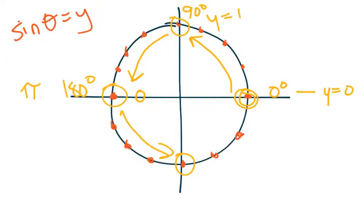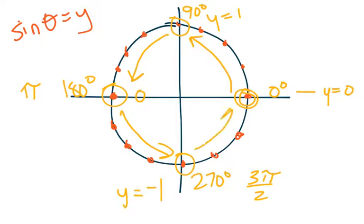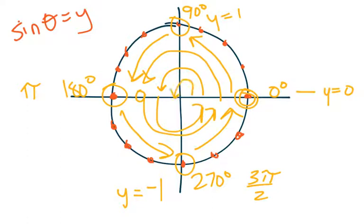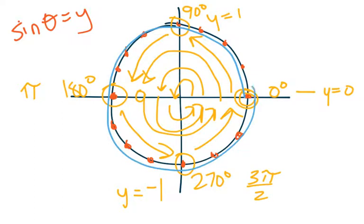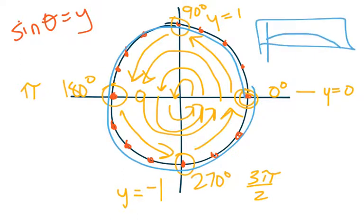Then as we go down to 270 degrees, or 3π/2, that y-value is now negative one. Then as we go back around, we take it back to zero. As the graph keeps going, we keep going around that circle and it's the same exact pieces. That's why it's called periodic — it's repeating those same values over and over. A period is only how long it takes to get around that circle once. Instead of graphically making it a circle, we're stretching it out — unraveling that circle.